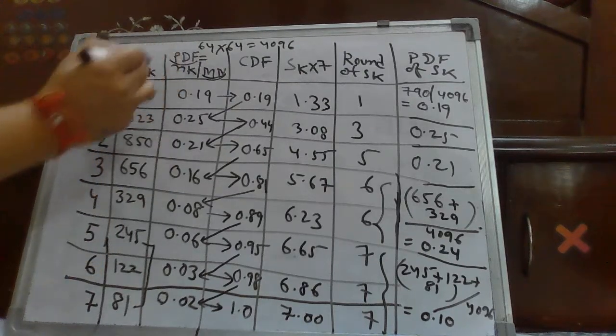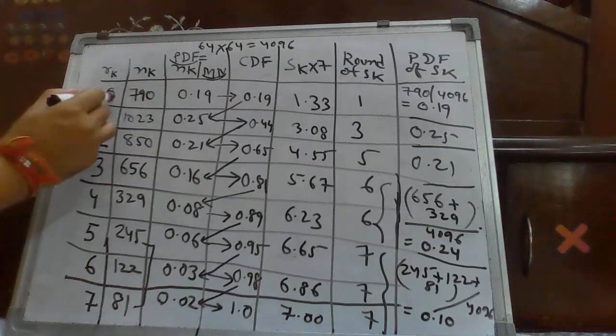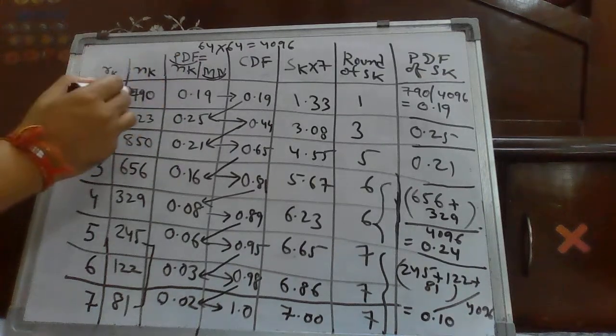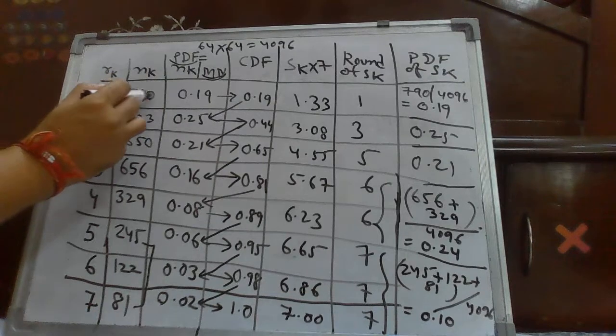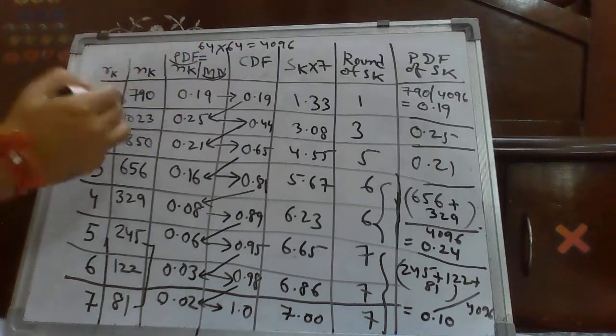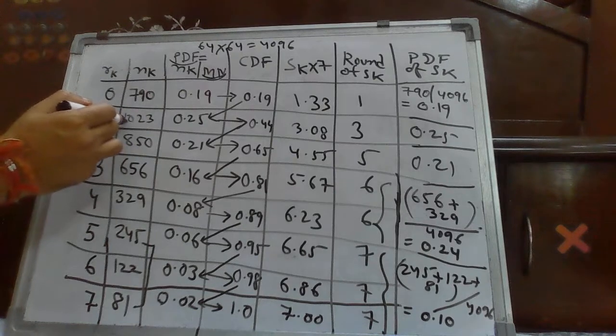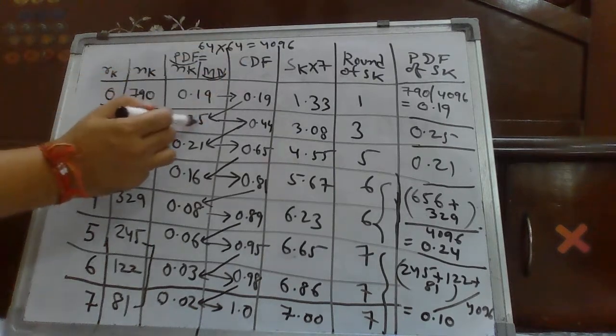So, in order to calculate probability density functions of K intensity value 0, what we will do? NK over MN. NK is nothing, it is the number of pixels having K intensity. That is 790 divided by 4096, we will get 0.19. Similarly, 1023 divided by 4096, we will get 0.25.